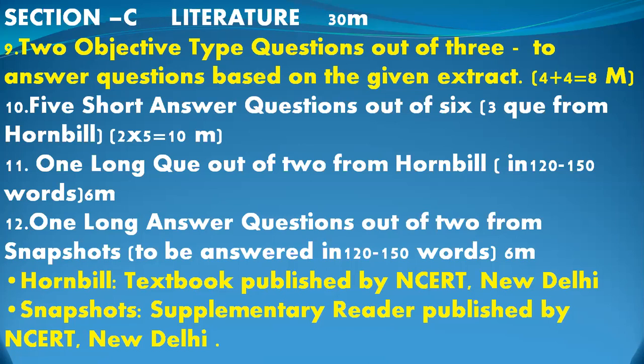Next is question 10 — short questions. There will be three questions from Hornbill and four questions from Snapshots — seven questions in total. Out of these seven, you have to attempt any five. The answer should be in 20 to 30 words. Sometimes the paper may have six questions — three from Hornbill and three from Snapshots — and you still attempt five. So the option varies but you always attempt five questions.